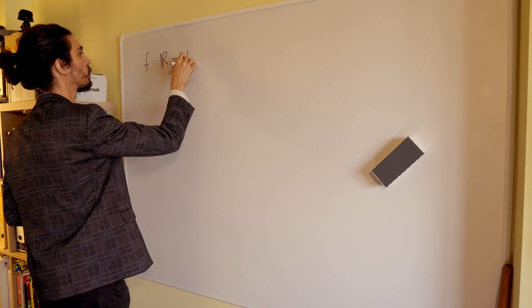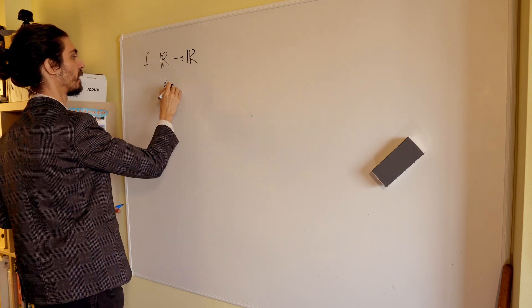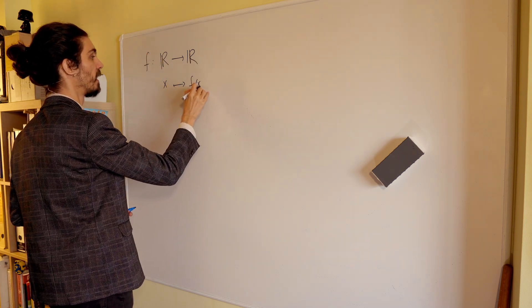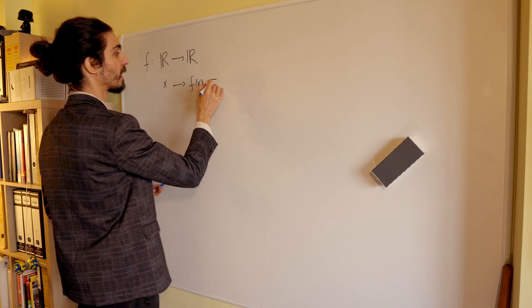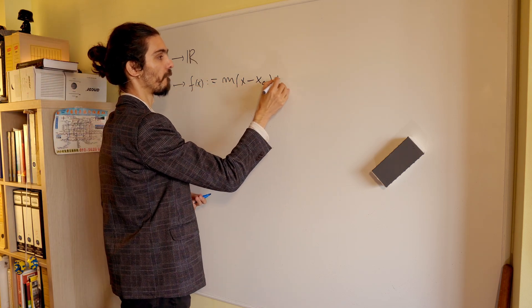It maps reals into reals, and every x in reals is mapped into f of x. And f of x is explicitly mx minus x0 plus y0.